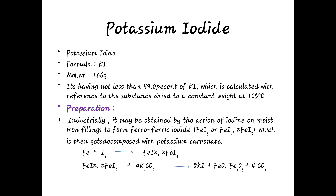Preparation of potassium iodide — first method: industrially, it may be obtained by the action of iodine on moist iron fillings to form ferroferric iodide, that is FeI2·2FeI3. This ferroferric iodide is then decomposed with potassium carbonate (K2CO3). Iron fillings react with iodine to form ferroferric iodide FeI2·2FeI3.